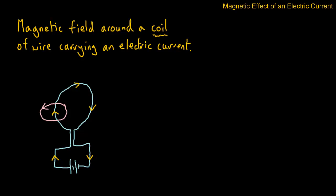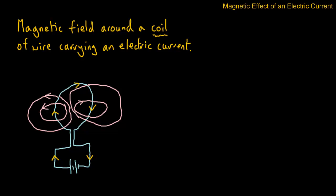If we go down the other side of the coil and we put in the magnetic field, we can see that the direction of the field is in that direction. If you drew other fields, we could see another one here and another one here. Where the field leaves we call that north, and where the field enters we call that south, just like in a normal magnet.